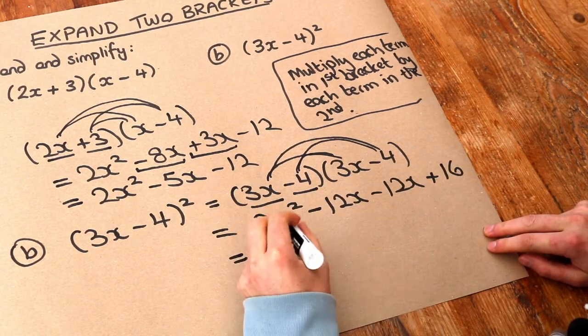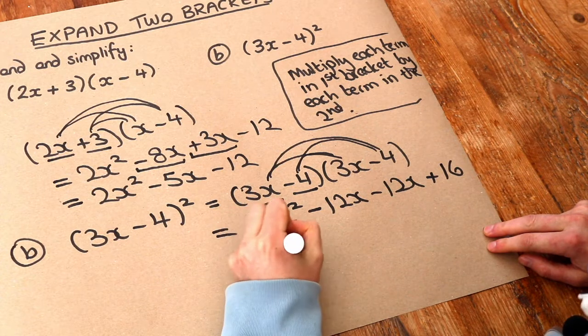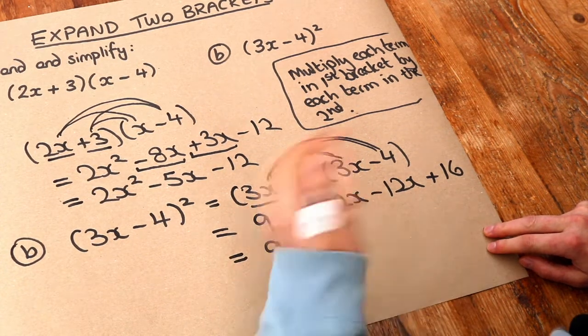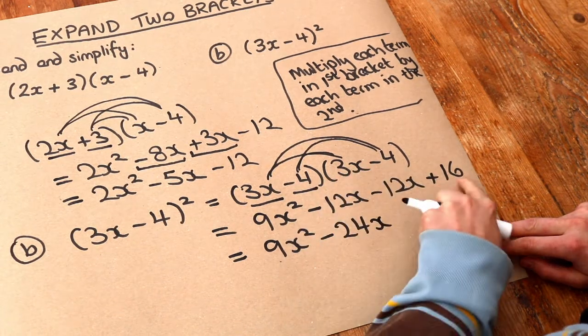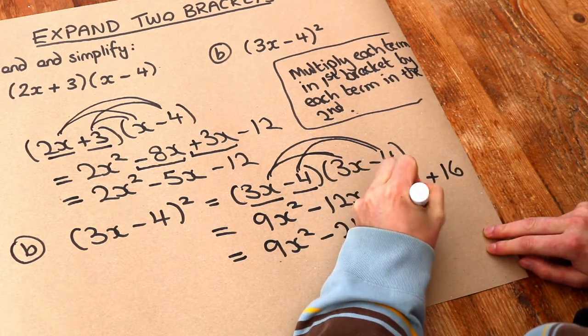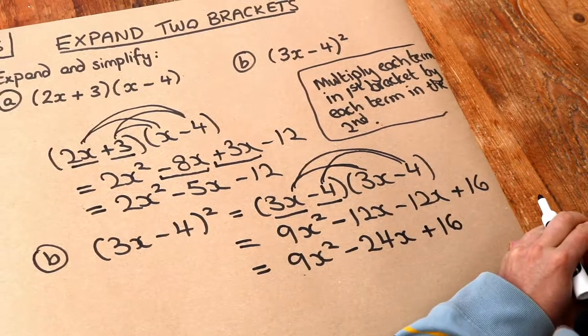And then let's collect like terms. There's only one x squared term. But minus 12 minus 12 is just minus 24. So we've got minus 24 lots of x. And we've got that plus 16 minding its own business at the end. And that is the final answer.